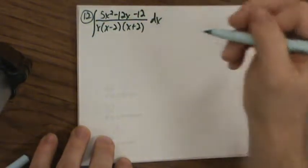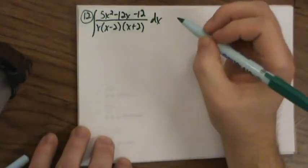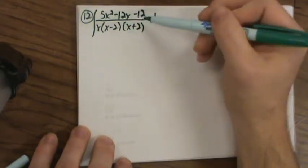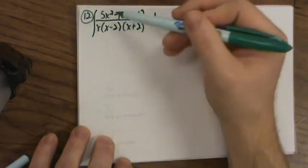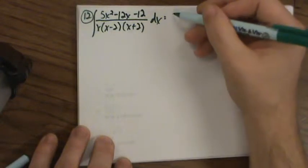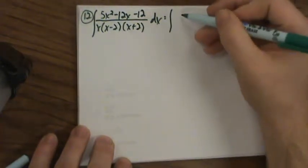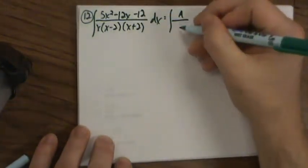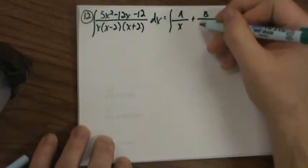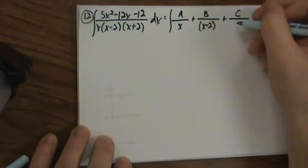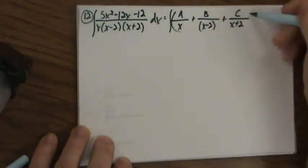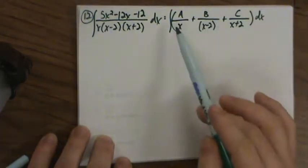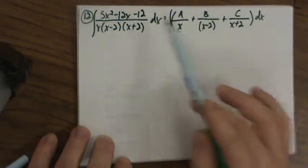We want to find the integral of this rational expression. First thing to check — always got to be sure that it's proper. A proper rational expression means that the degree of the denominator is greater than the degree of the numerator. This is degree 3, and the numerator is degree 2, so it is proper. What we're proposing is that this could be the integral of some sum of rational expressions — there's some number A, number B, number C out there, that when I add them all together, I wind up with this.